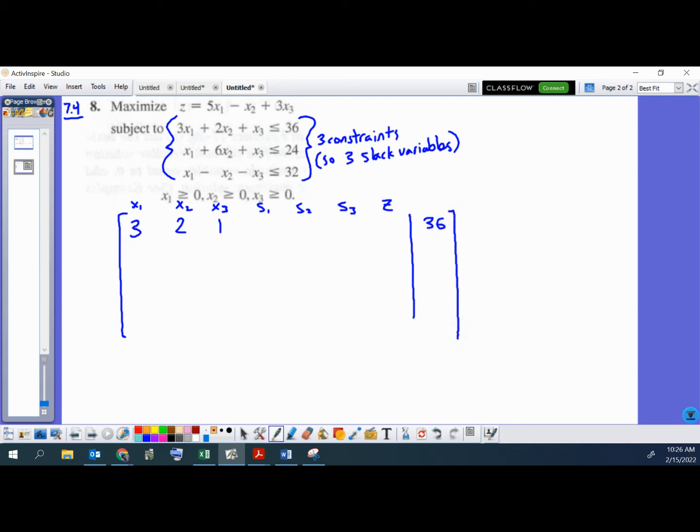And that's the end of this matrix, this simplex tableau. And for our slack variables, again, each constraint gets its own slack variable. So this one gets s1. So we're going to put 1 for s1, 0 for the other two slack variables, 0 for z here. At the beginning, z will only show up in that last row with the objective function. Do that last.